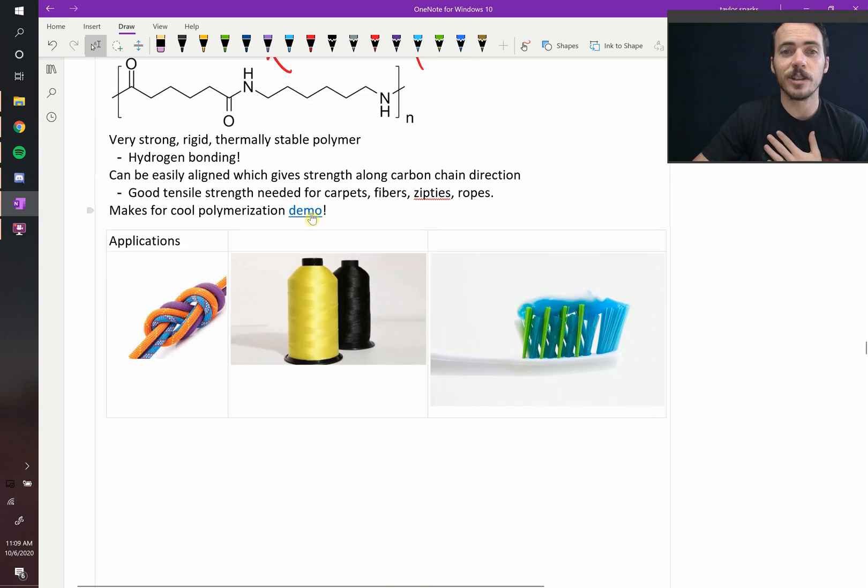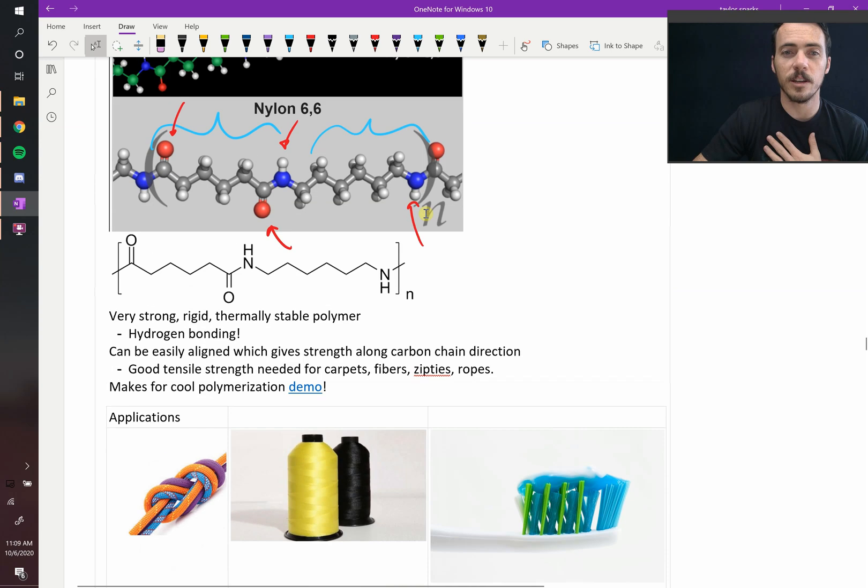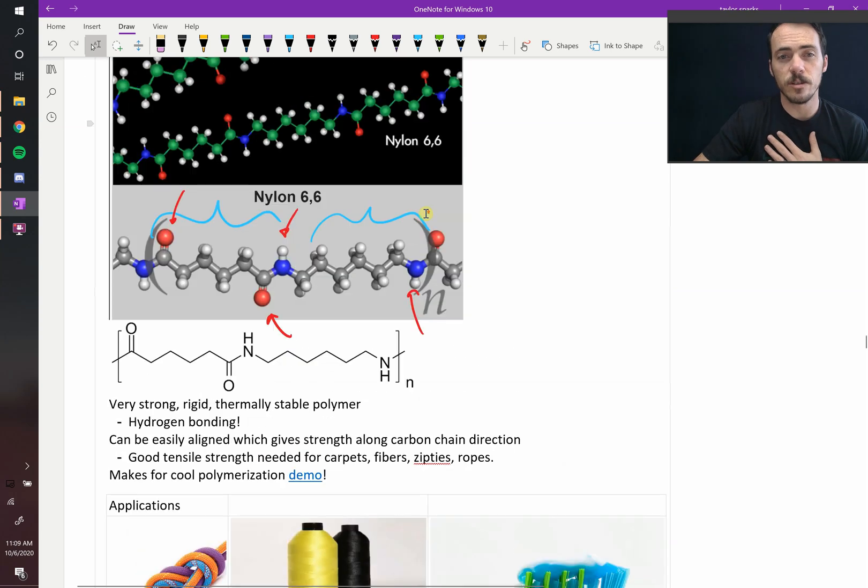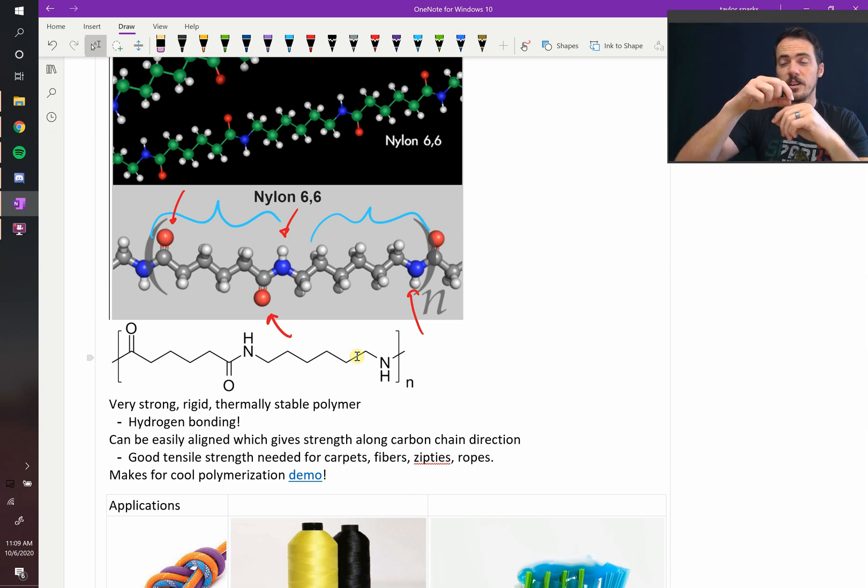Also it has a really cool polymerization demo which I'll be making in the near future where essentially you start out with the monomer for this one and the monomer for that one and you pour them one on top of each other and right at their intersection where those two films meet, it forms nylon and then you can just keep on pulling it and it will just keep on creating as we go. So I'll have a video on that soon.